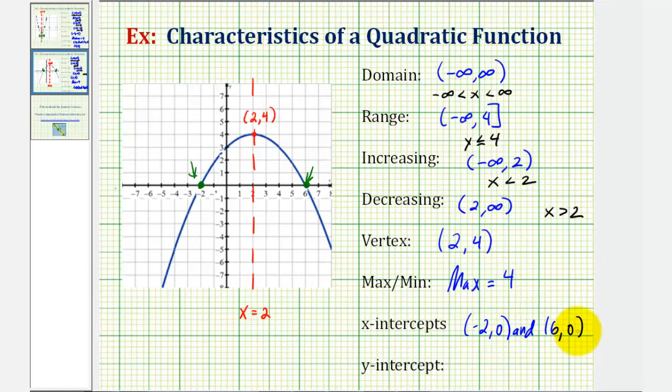The y intercept is where the graph crosses the y axis, which occurs here at the point zero, three. I hope you found this helpful.